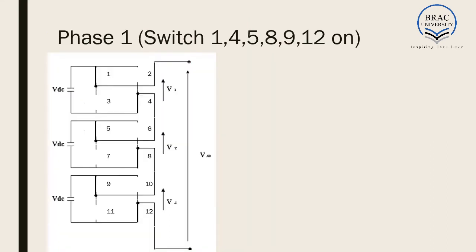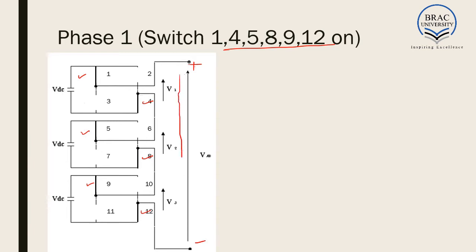Now, at first phase we are considering switches 1, 4, 5, 8, 9, and 12 are on. That is, these diagonal switches are on. We are considering this is our first phase of calculation. We are considering this terminal is plus and this is minus.